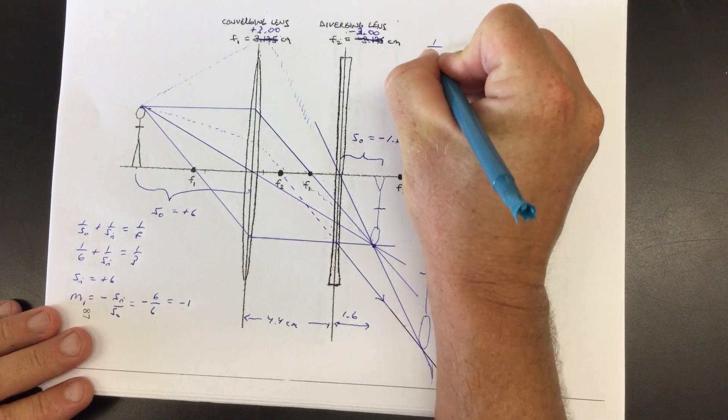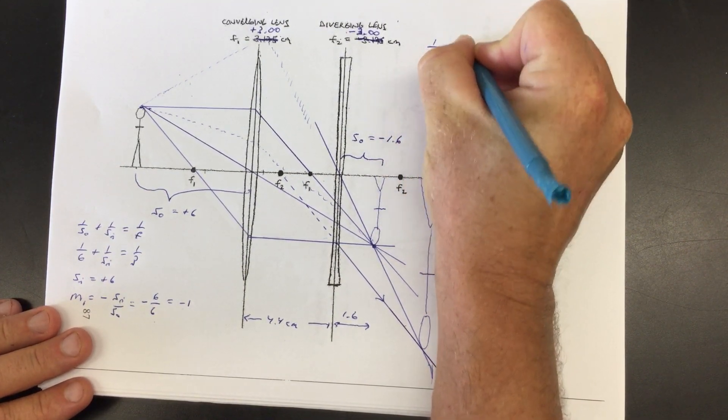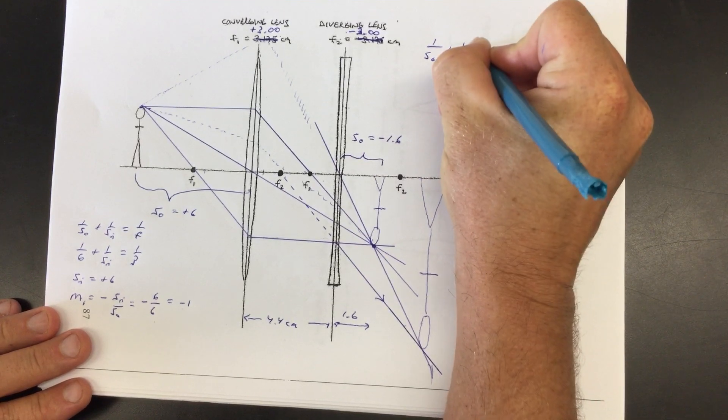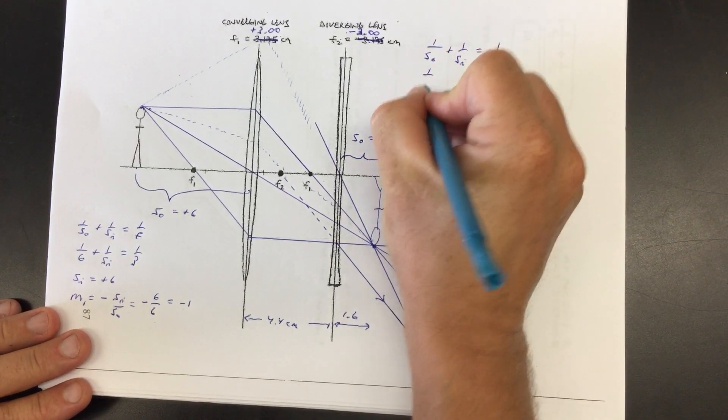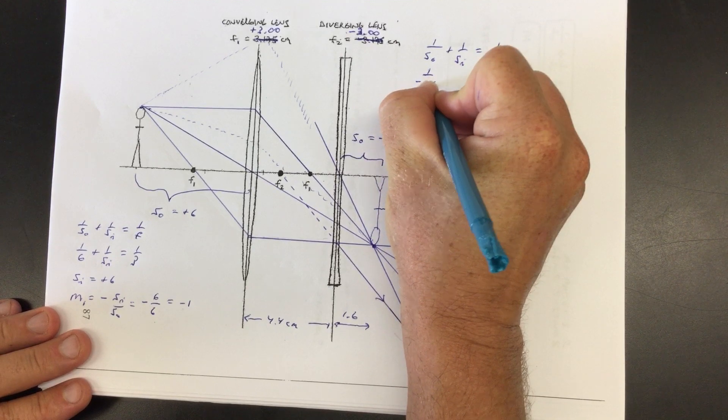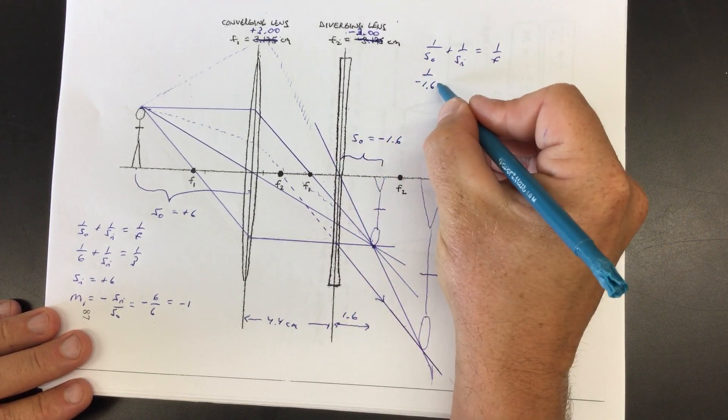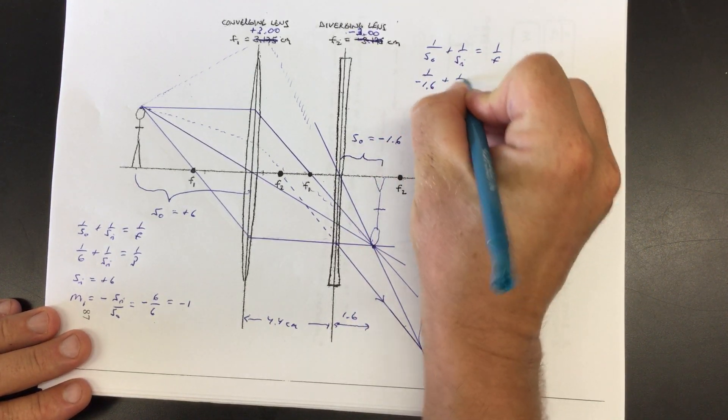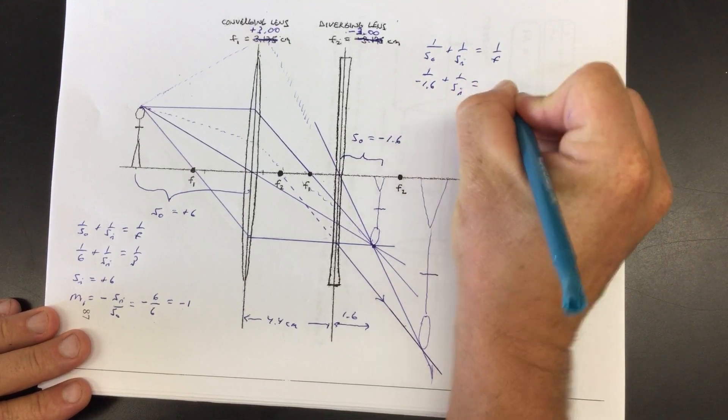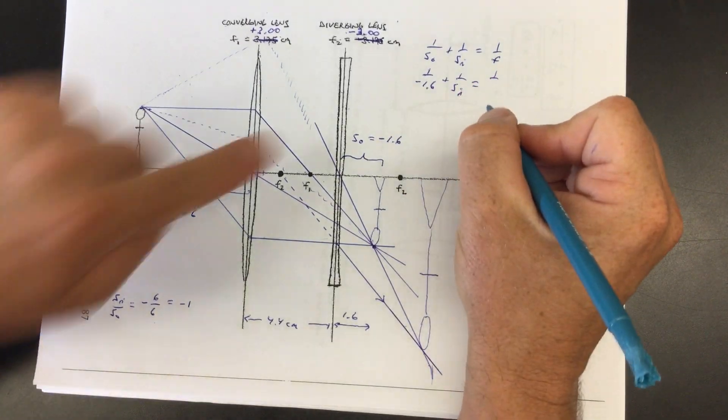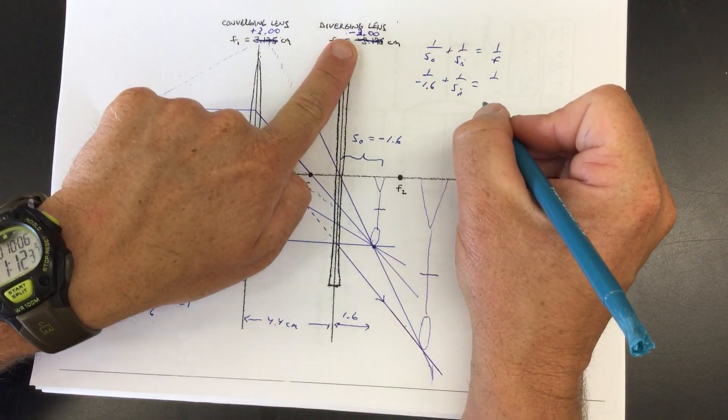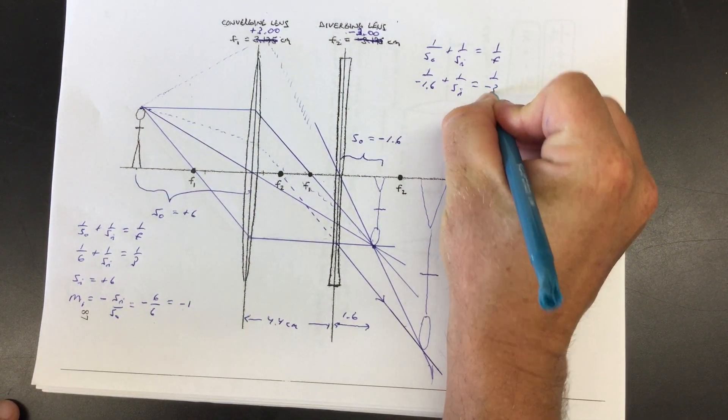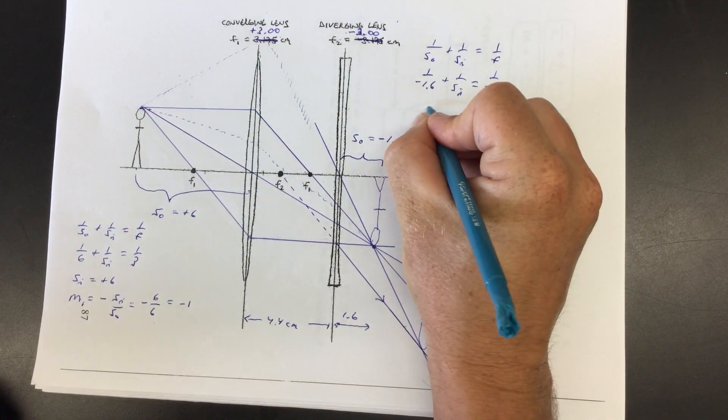So now you just run by, you can go on autopilot and just run the thin lens equation again. So we'll say one over SO one over negative 1.6, that rarest of beasts, that negative object distance plus one over SI equals one over. Now this object or this diverging lens had a negative focal length, negative three. So now it's time to pull up a calculator.